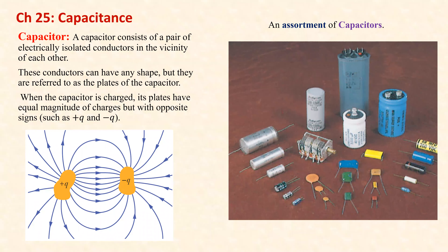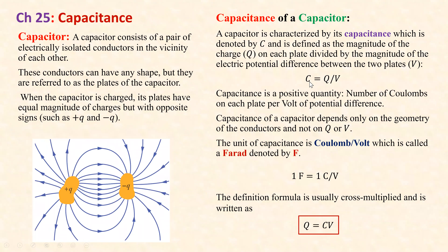We started this chapter by introducing capacitors, which are two conductors called the plates of the capacitor in the vicinity of each other. The closer they are together without touching, the larger the capacitance. The capacitance C is defined as the charge on each plate divided by the potential difference across the two plates. The unit is the farad, which is one coulomb per volt. We cross-multiply to write Q = CV.